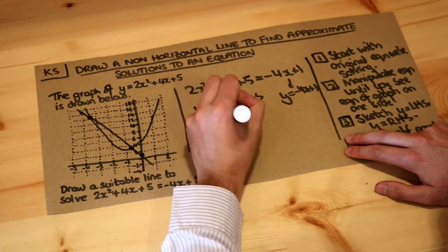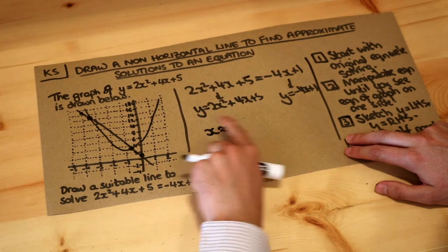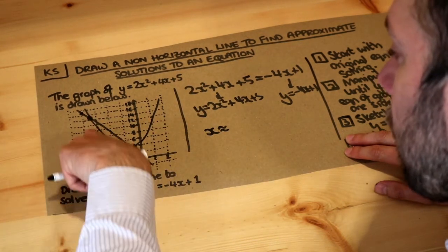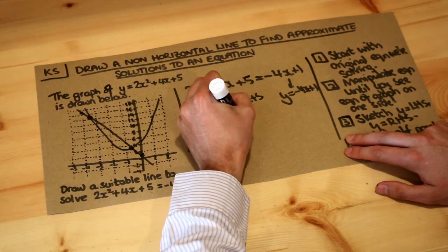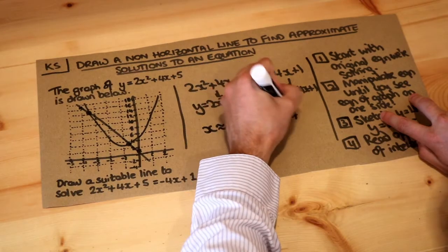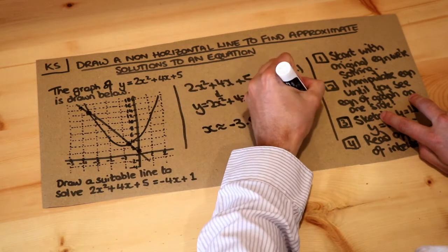We think that the value of x is approximately, and that's approximately equal to, I would say that's minus 3.5-ish. And I would say, sorry I made a mistake here, maybe minus 0.6.